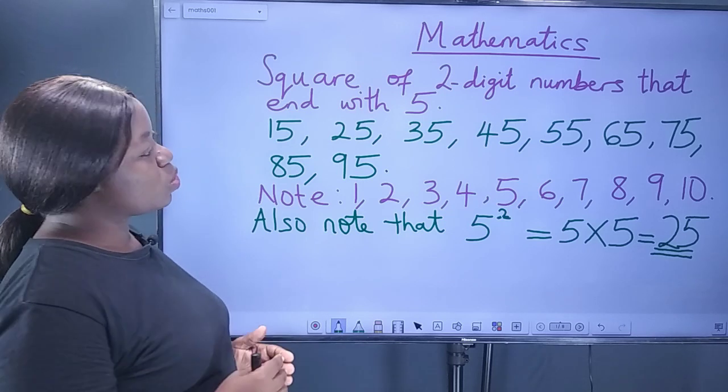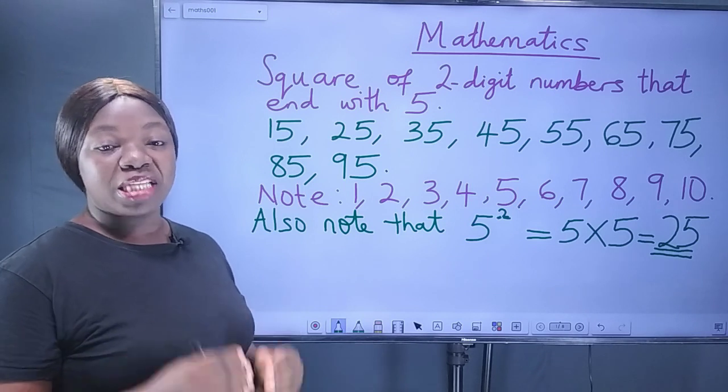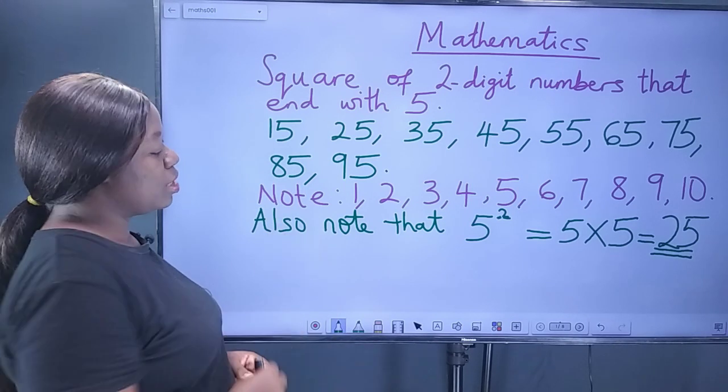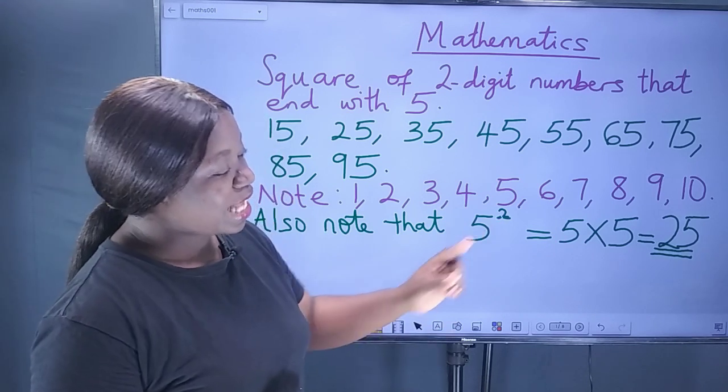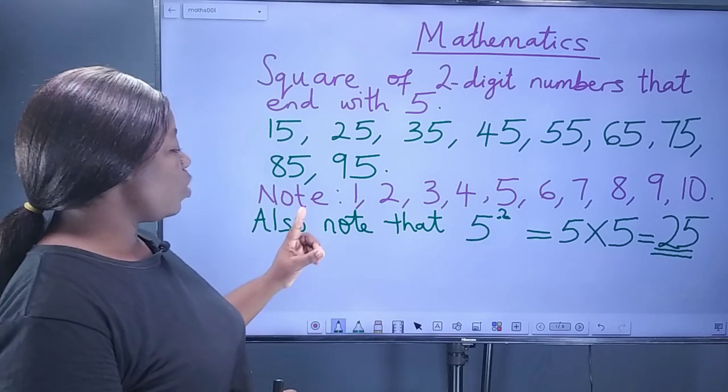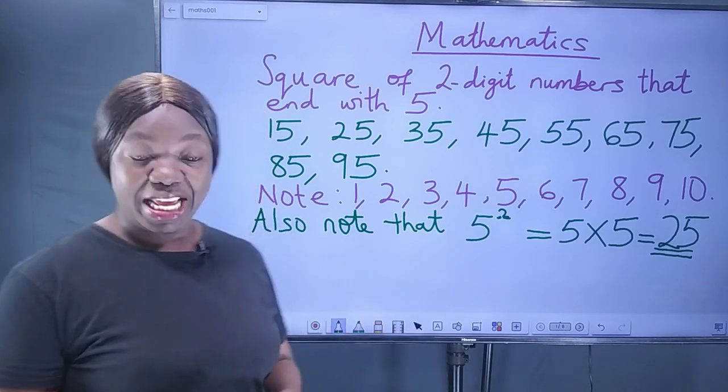And for us to find the square of 2-digit numbers that end with 5 using this simple mathematical trick, you need to note our 9 digits and the last number which is 10. We have 1, 2, 3, 4, 5, 6, 7, 8, 9, 10 because we'll be needing them. So, take note.